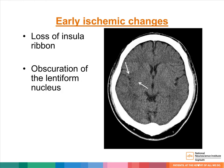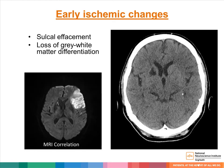In this example of an acute ischemic stroke, there is loss of the right insular ribbon and obscuration of the right lentiform nucleus, compatible with a right middle cerebral artery territory infarct. In this example, we see loss of grey-white matter differentiation and swelling in the left frontal lobe compatible with an acute left middle cerebral artery territory infarct.